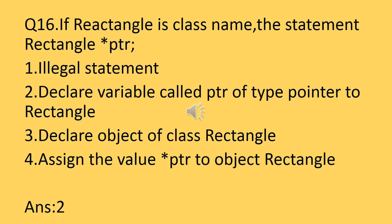Question number sixteen: if 'Rectangle' is a class name, what does the statement 'Rectangle* ptr' mean? The answer is: it declares a variable called ptr of type pointer to Rectangle. Rectangle is the class name, ptr is a pointer variable, and the star (*) is a dereferencing/indirection operator. The pointer variable ptr points to the Rectangle class.